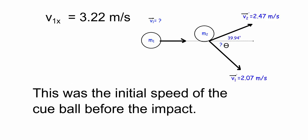And that gives us, round it to three sig digs, 3.22 meters per second, and that was the initial speed of the cue ball before impact.